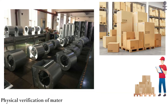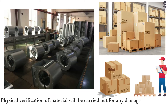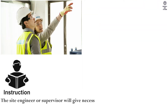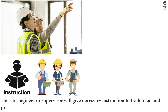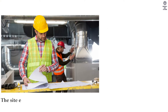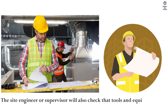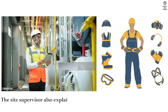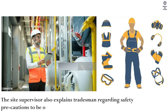Physical verification of material will be carried out for any damages prior to taking from stores. The site engineer or supervisor will give necessary instructions to tradesmen and provide necessary construction or shop drawings. The site engineer or supervisor will also check that tools and equipment available are in compliance with contract requirements. The site supervisor also explains to tradesmen the safety precautions to be observed.